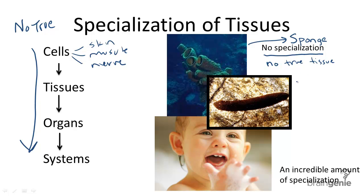Categorized very differently from sponges, flatworms developed specialized cells and also developed complex organs. But this complexity stopped at complex organs, because they don't have complex organ systems.